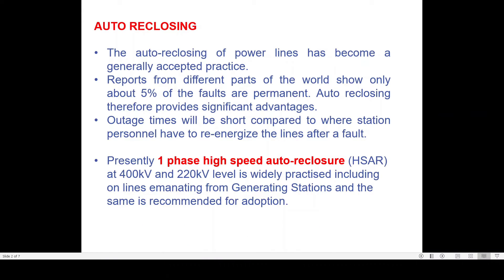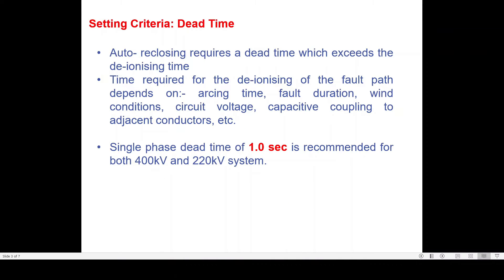This is the autoreclosing cycle we will discuss further. First, let us understand the different terminologies. The first is dead time. Dead time is required because whenever there is a fault and your distance protection relay has issued a trip command to the circuit breaker poles, the moving contact separates from the fixed contact and an arc develops. You have to quench that arc, and only when this arc is quenched and sufficient dielectric strength has built up between the contacts can you close the circuit breaker. This time required for build-up of dielectric strength and deionization of the arc is called dead time.